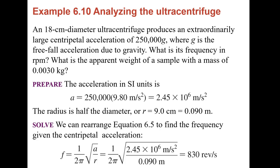We're going to look for the apparent weight of a sample with a mass of 0.003 kilograms. We know it has an 18-centimeter diameter. We also know the largest centripetal acceleration is 250,000 g's — 250,000 times the acceleration due to gravity. To figure out acceleration, we take 9.8 times 250,000, which is 2.45 times 10 to the 6 meters per second squared — that's the centripetal acceleration.